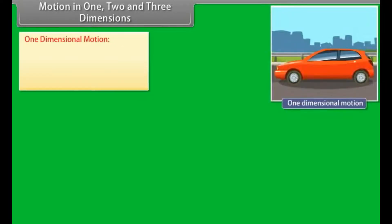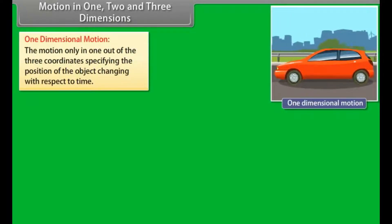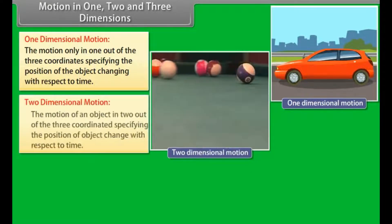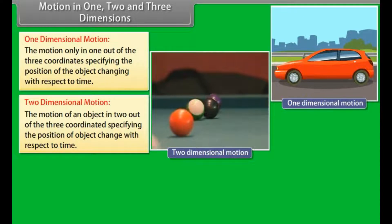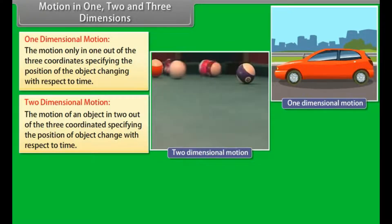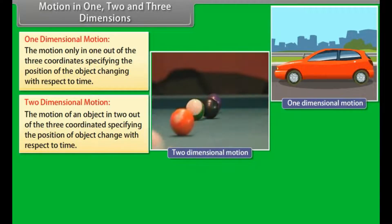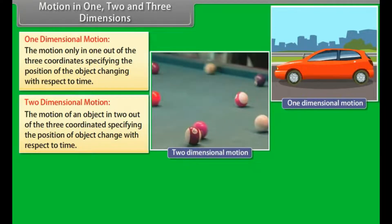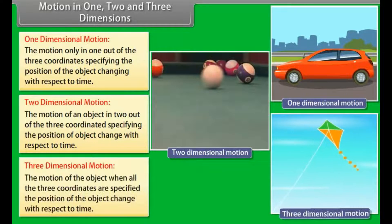Motion in one, two and three dimensions. One dimensional motion: The motion only in one out of three coordinates specify the position of the object changing with respect to time. Example: Car traveling in a straight line. Two dimensional motion: The motion of an object in two out of three coordinates specifying the position of object change with respect to time. Example: A billiard ball moving over a billiard table. Three dimensional motion: The motion of the object when all the three coordinates are specified, the position of the object change with respect to time. Example: A kite flying on a windy day.